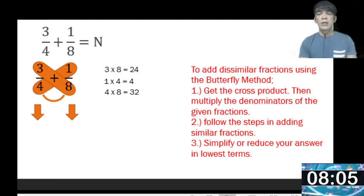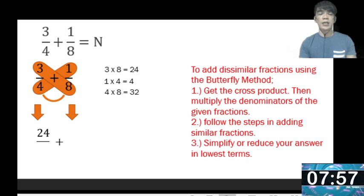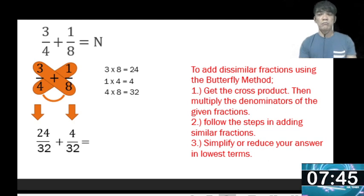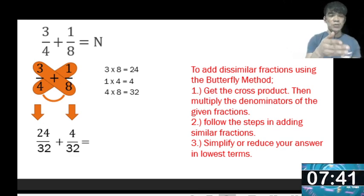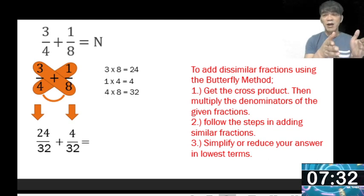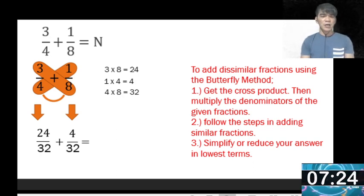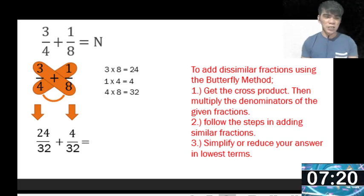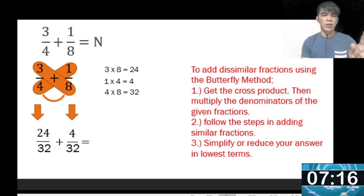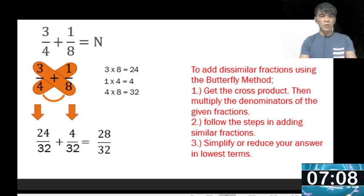The product of numerator 3 and denominator 8, which is 24, will be the numerator of the first fraction. The product of numerator 1 and denominator 4, which is 4, will be the numerator of the second fraction. The product of denominators 4 and 8, which is 32, will be the denominator of both fractions. So 3 over 4 becomes 24 over 32, and 1 over 8 becomes 4 over 32. Now they are similar fractions and we can add them. Just add the numerators and copy the denominator: 24 plus 4 equals 28 over 32.